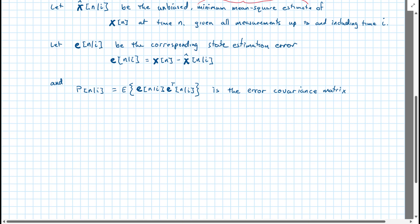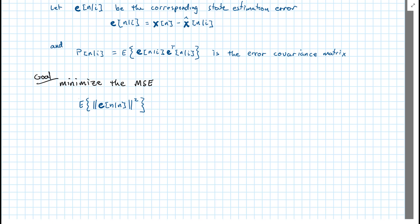Okay, now that we've defined a lot of quantities, our goal is going to be to minimize the mean squared error e n given n. So this is minimize the error e n given all the observations up to time n at time n. We can write this in several ways and this particular notation or transformation is really useful.